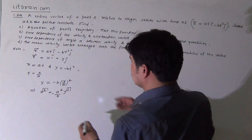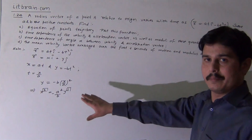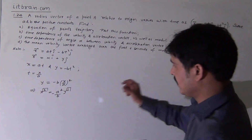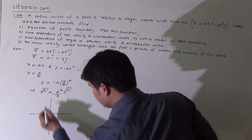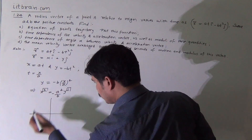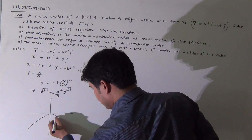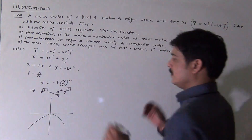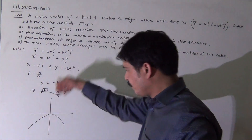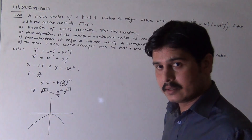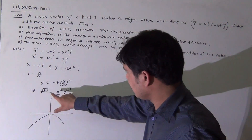This equation contains x to the power two and y to the power one, so this is the equation of a parabola. The plot will be a downward-facing parabola. The equation of the trajectory is x² = -(a²/b)·y, which is a downward-opening parabola.